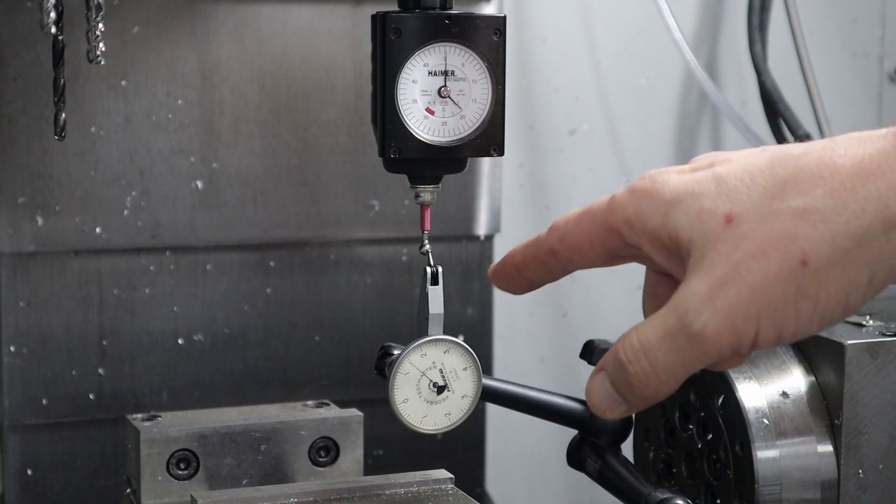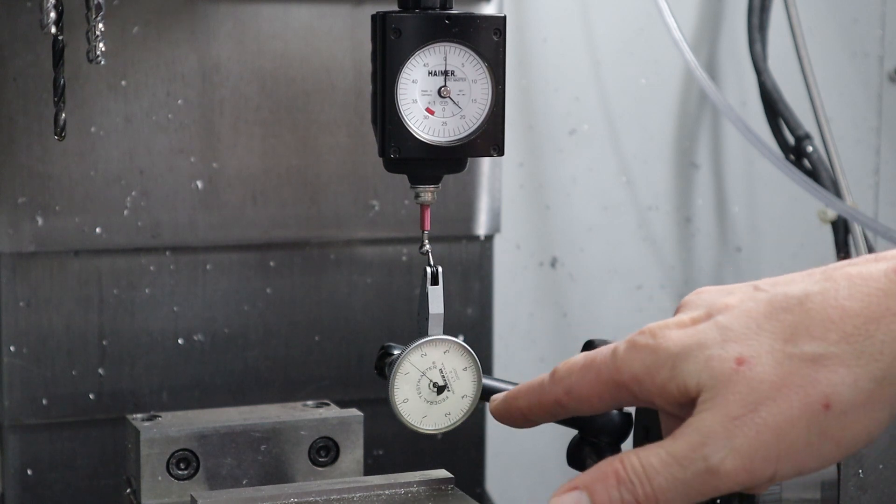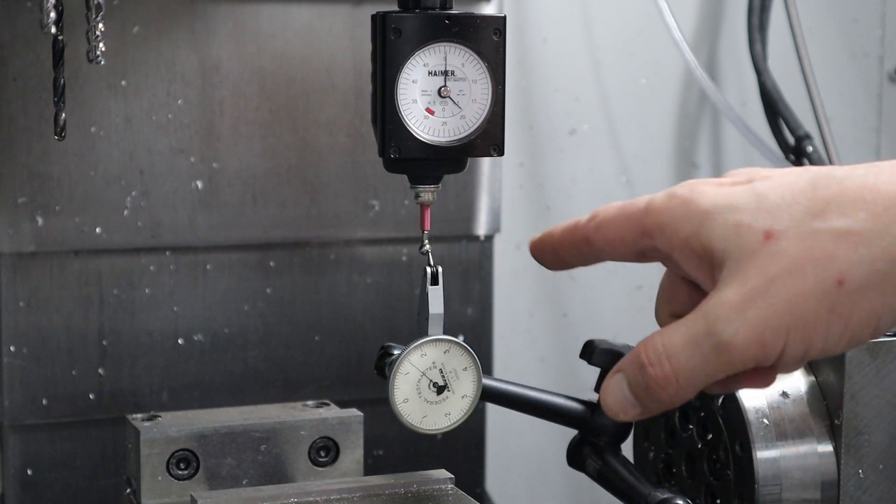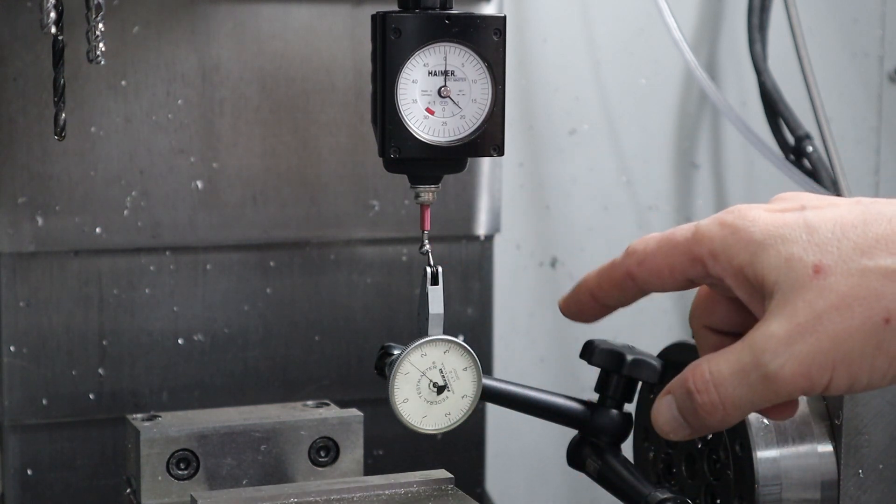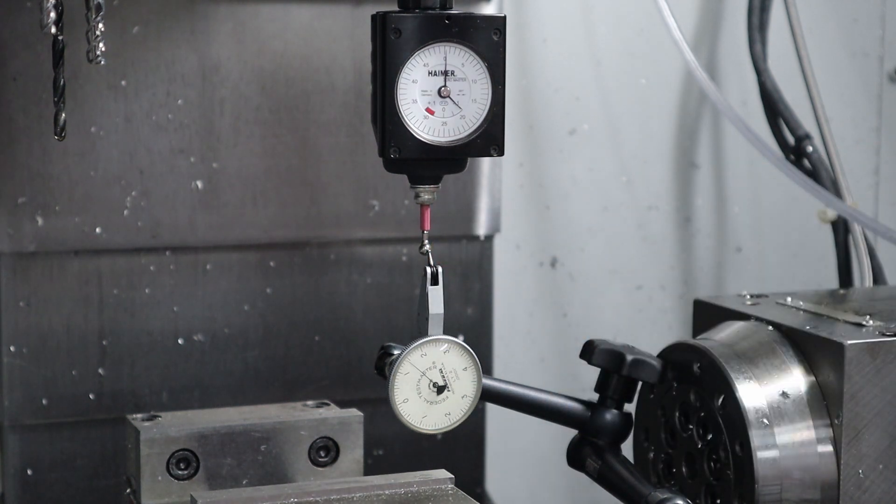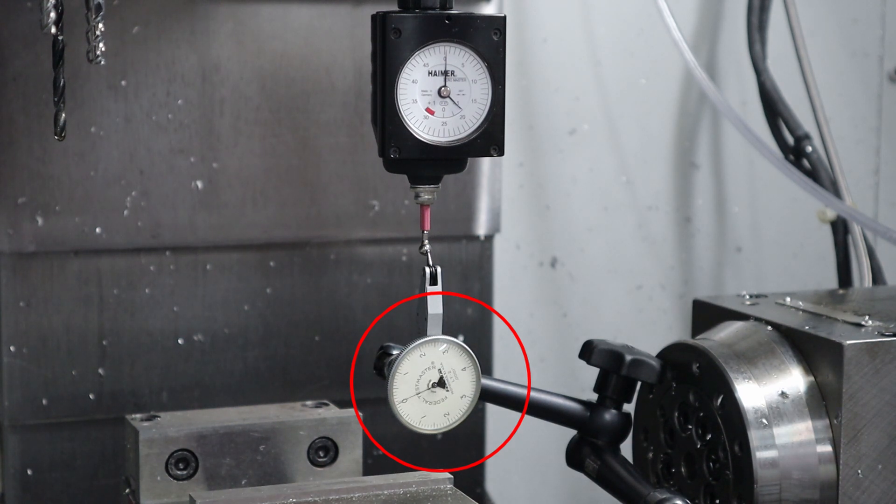So I've put the imperial tip on now with a tenths indicator, and now what I want to do is move the X and the Z until I'm right in the middle of the ball. So I'm going to start with the X and go back and forth until I get to the maximum. So it looks like about there. And then I'm going to do the same in Z.